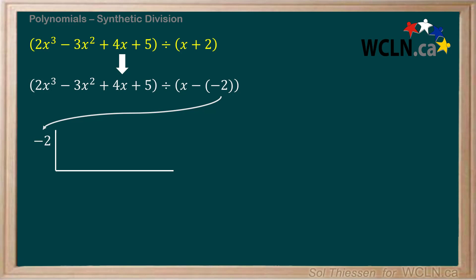From here we bring the coefficients of the dividend polynomial into the upper half of the box. So first we write the 2 from the x cubed term, then the negative 3 from the x squared term, then the 4 from the x term, and finally the 5, which is the constant term. This is the setup that you saw on the last page.